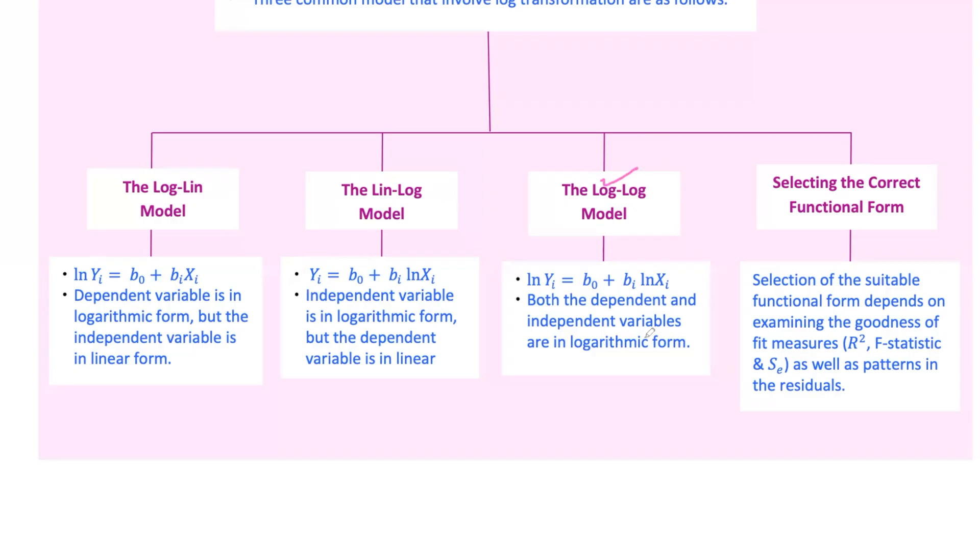In log-log-model, both variables are in logarithmic form. This model is also called the double-log-model, and is often used to calculate elasticities. The slope coefficient represents the relative change in y for a relative change in x. Suppose you're analyzing the relationship between the price of a product, x, and the quantity sold, y. You believe that both the price and quantity have an elasticity relationship. You would use the log-log-model to capture this relationship. If you find that b1 is minus 1.2, it means that a 1% increase in the price leads to a 1.2% decrease in the quantity sold.